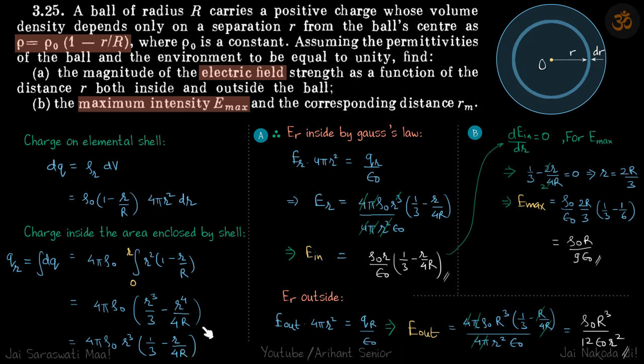So we put the value of q from here to here and we get E inside as this. So rho naught by epsilon naught r into 1 by 3 minus r by 4R.